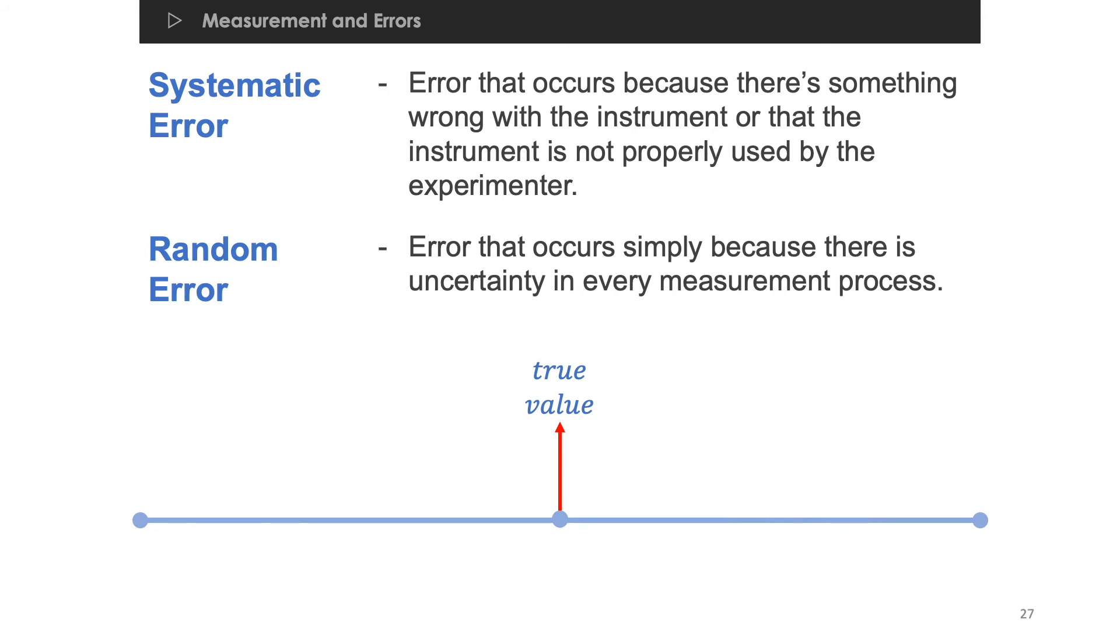Now, what if you perform a different multiple trial measurements, but this time, all the experimental values shift to a lower value than the true value? In this case, this is still considered as a systematic error.